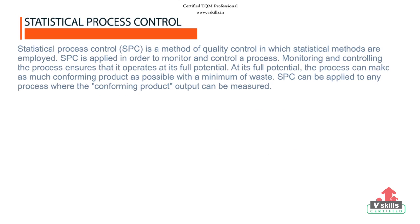Statistical Process Control. We define Statistical Process Control or SPC as a method of quality control in which statistical methods are employed. SPC is applied in order to monitor and control a process. It is not only a toolkit.